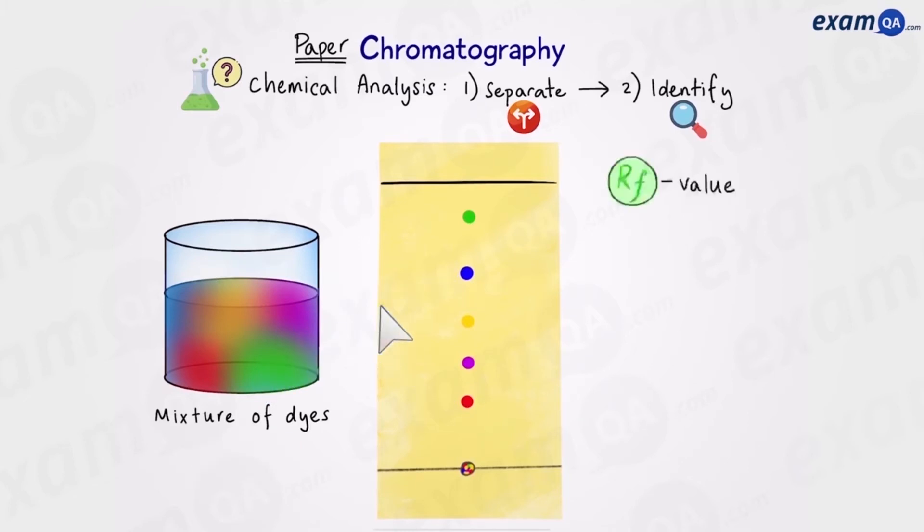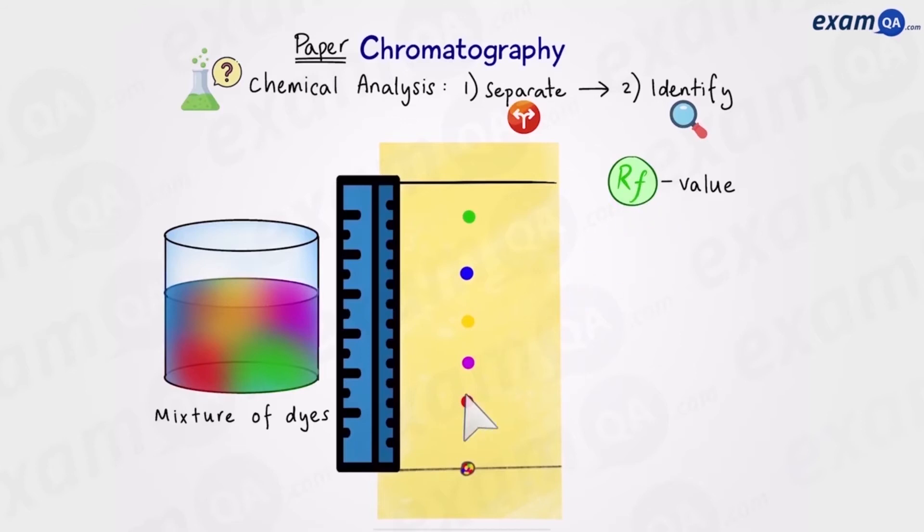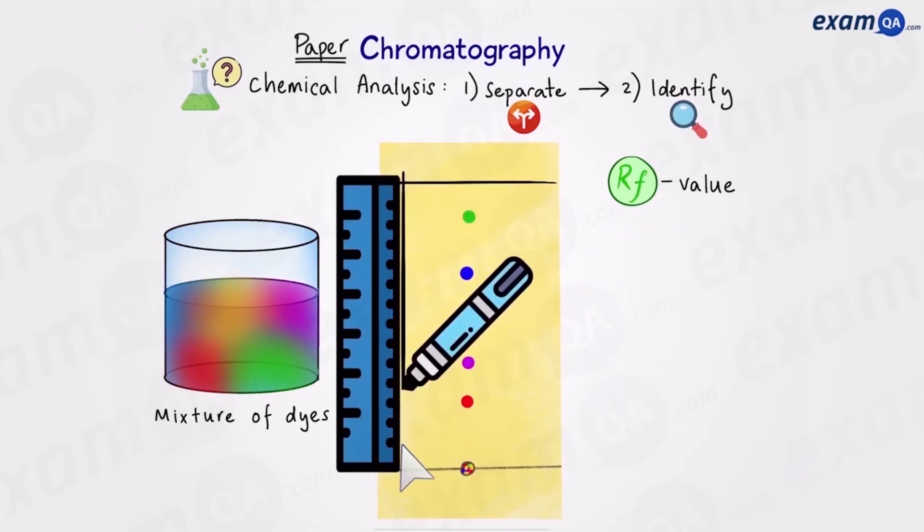To do that we're going to have to use RF values. So how do we work out RF values? The first thing we're going to do is draw a line from the start line to the solvent front. Let's say this line is 10 centimeters long.